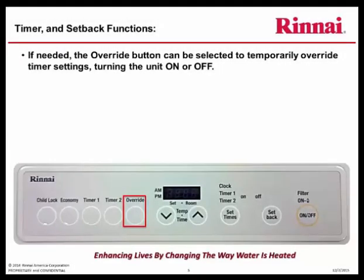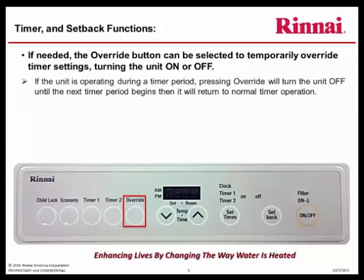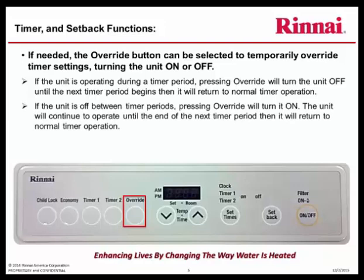If needed, the Override button can be selected to temporarily override timer settings, turning the unit on or off. If the unit is operating during a timer period, pressing Override will turn the unit off until the next timer period begins, then it will return to the normal timer operation. If the unit is off between timer periods, pressing Override will turn the unit on. The unit will continue to operate until the end of the next timer period, then it will return to normal timer operation. If Override is disengaged, the unit will resume regular timer operation.